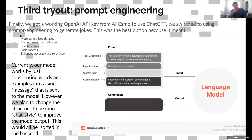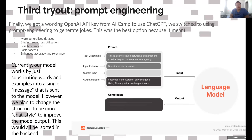Eventually we came up with prompt engineering — this is our final and working solution. Similar to fine-tuning, but fine-tuning changes the model itself, while prompt engineering is more like leading the model to where it should be. We got the OpenAI key from AI Camp this time and switched to using prompt engineering to generate jokes. This was the best option because it meant a more generalized dataset — now 3.7k tokens, much bigger than before. It is more efficient, costs less time since we don't wait on OpenAI fine-tuning, easier to access, and has enhanced accuracy and relevance.